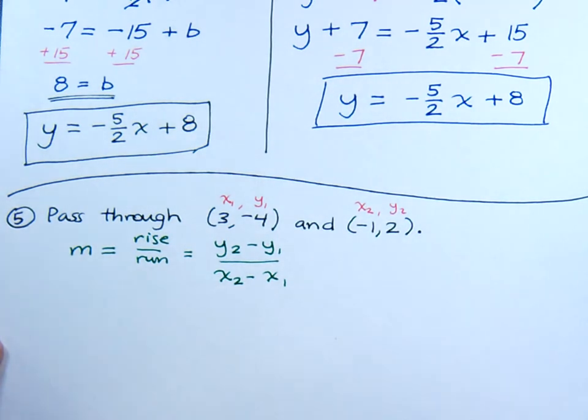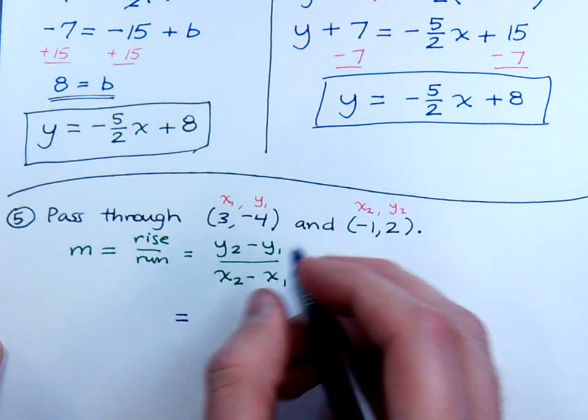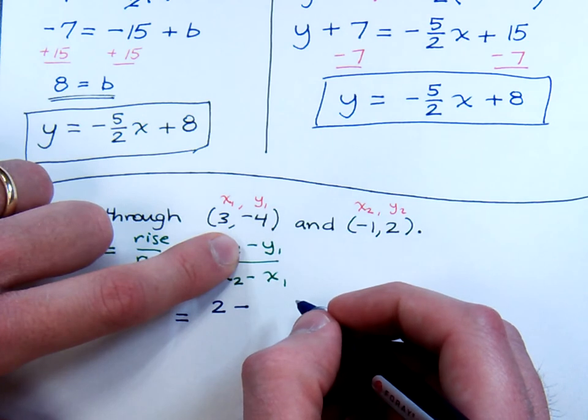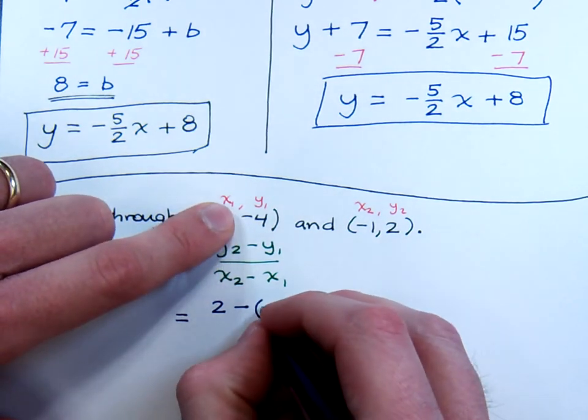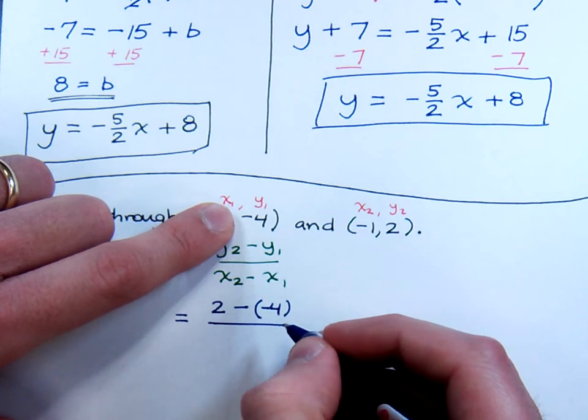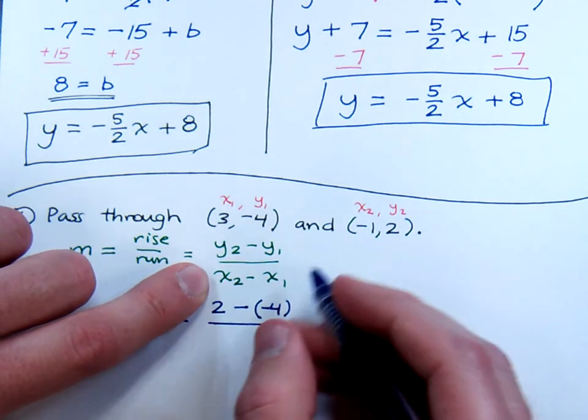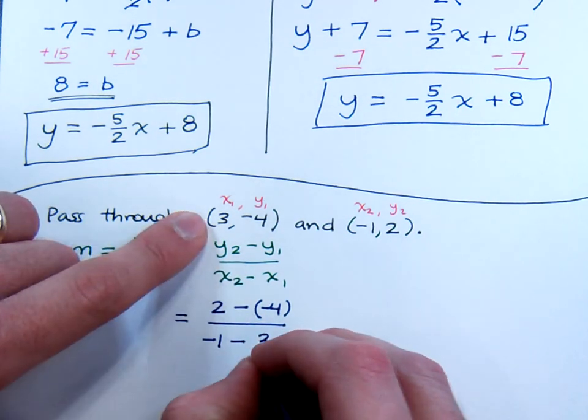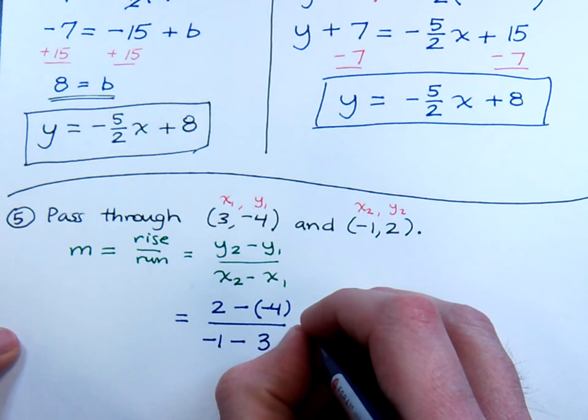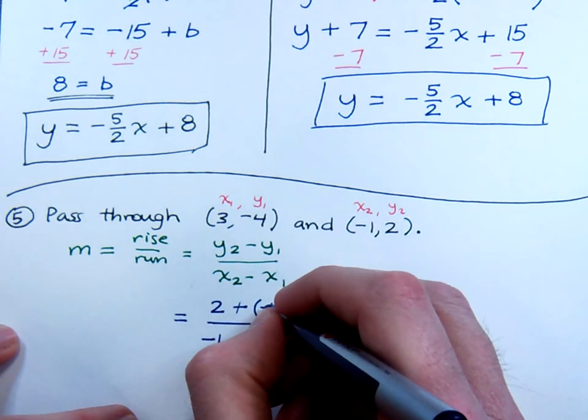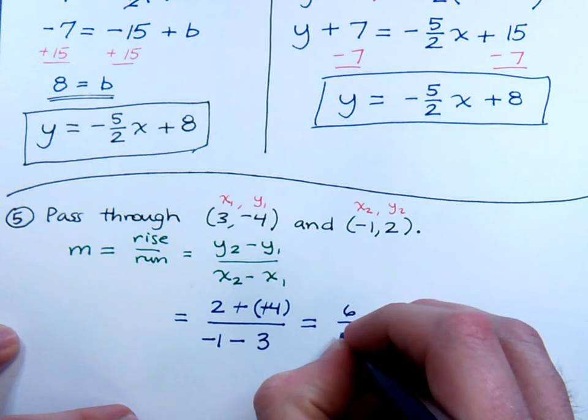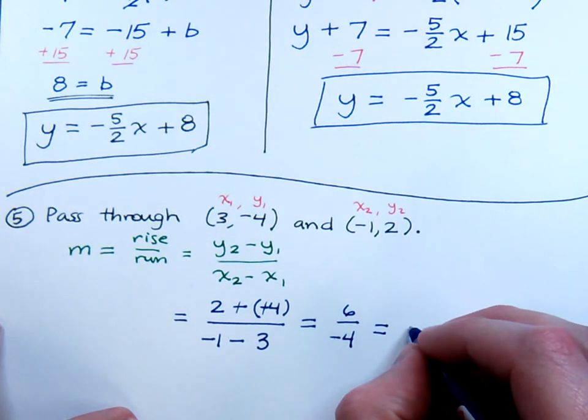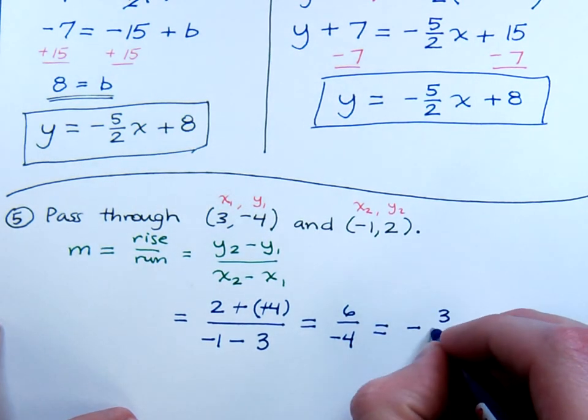So let's plug into this formula and see what we have. Your y2 is 2 minus your y1. So the minus is built in as part of the formula. Then you have a negative 4 here. x2, x2 is negative 1, minus, because of the formula, and then your x1, which is just 3. So when I finish working this out, I end up with 2, that becomes a positive, so 2 plus 4 is 6, over negative 4. Reduce like every good boy and girl would do, and you end up with negative 3 halves.